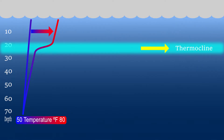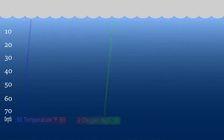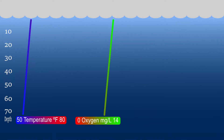The thermocline is a transitional layer of water — thin but distinct — that has a drastic change in water temperature. It changes from very warm to cold very rapidly, separating the upper warmer layer from the lower colder layer. Once these layers are formed, they do not mix.